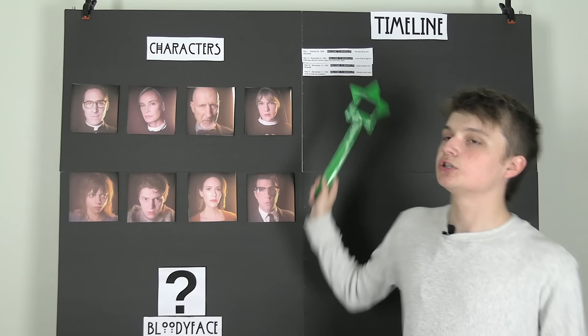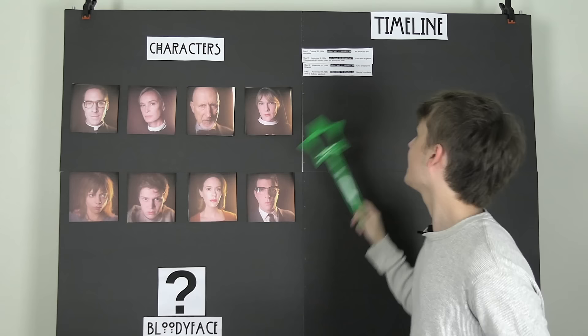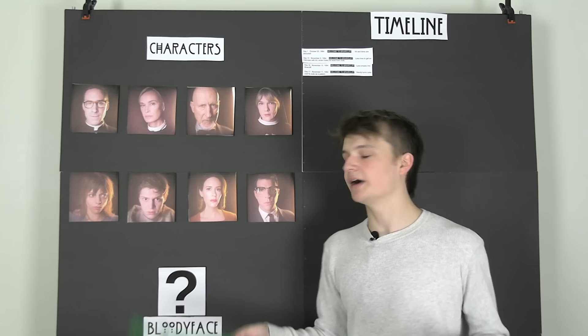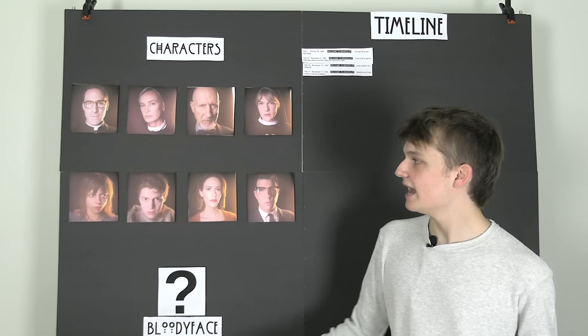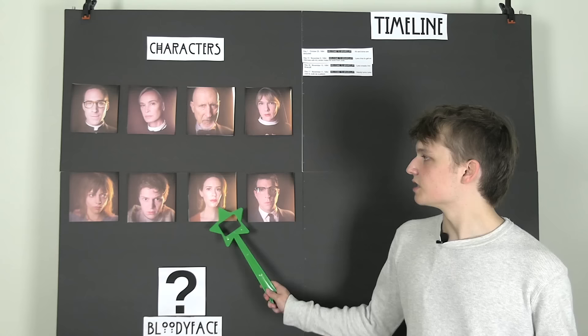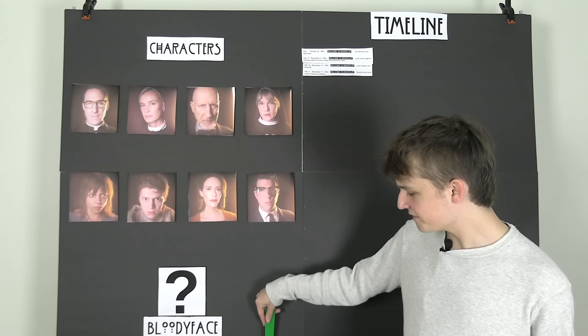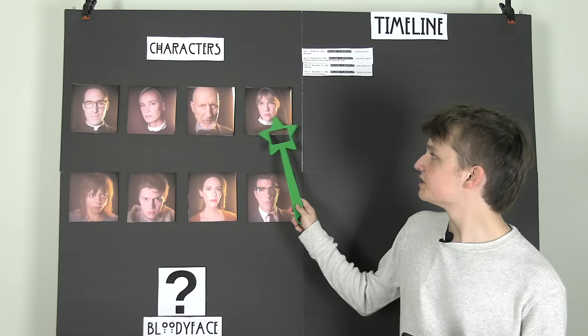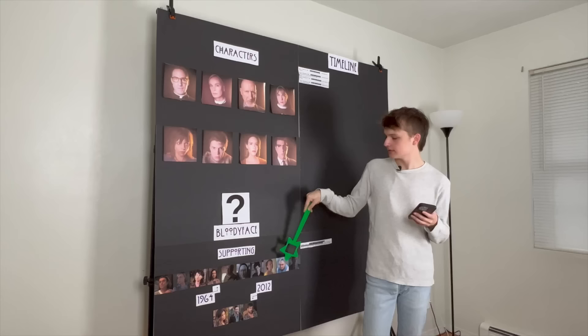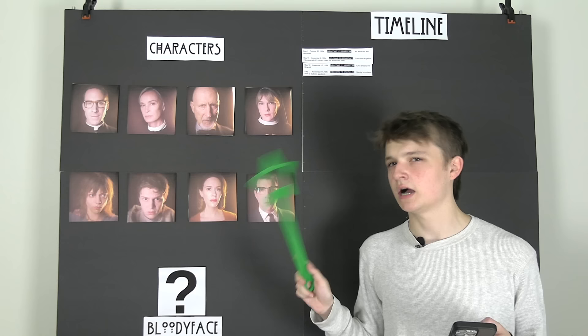We skip down two weeks to November 9th, 1964. We see Miss Lana Winters entering the asylum to get an interview from Jude about the bakery, but she is technically going undercover to get information about Kit, who is accused of being Bloody Face. It's stated that Kit's wife Alma was found skinned, and that's how they figured out it was Kit. Lana enters and is greeted by Pepper — fan favorite Pepper — who says she wants to play with Miss Lana as she enters.